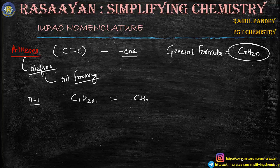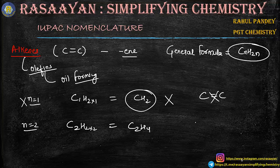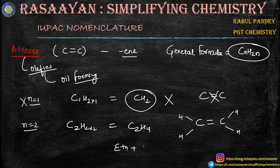The simplest alkene starts from n equals to 2. C2H(2×2) gives us C2H4. This is the simplest molecule of alkene where two carbon atoms have a double bond between them, and this is how hydrogen atoms satisfy the valencies. Its name — since there are 2 carbon atoms we use 'eth', and with the primary suffix 'en', eth plus ene gives ethene.